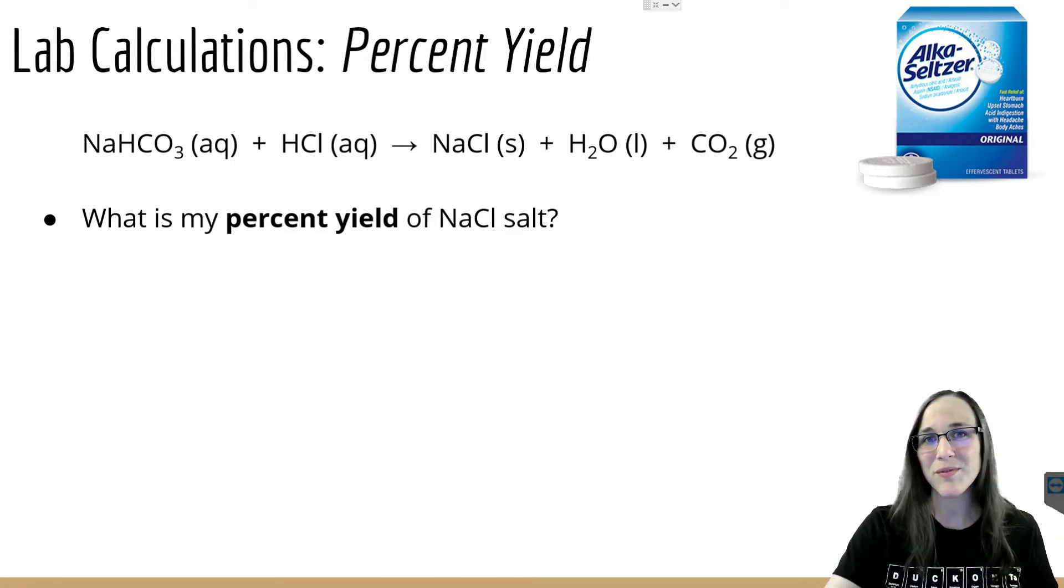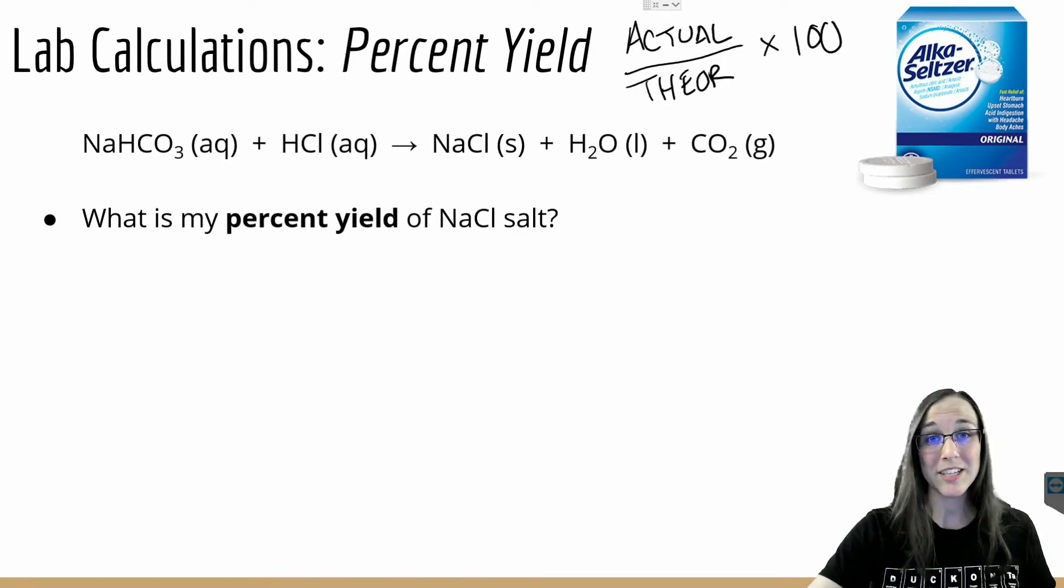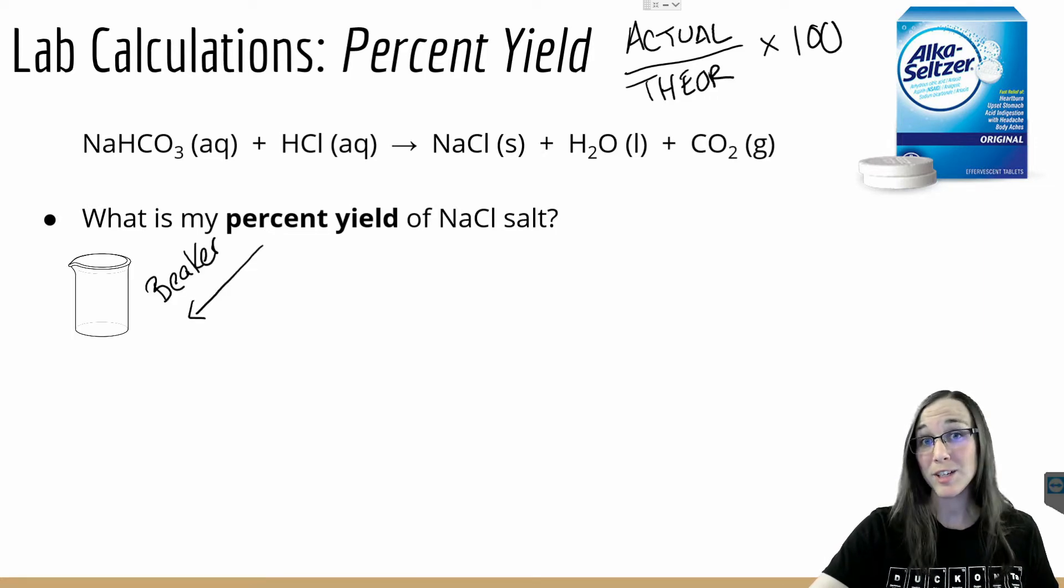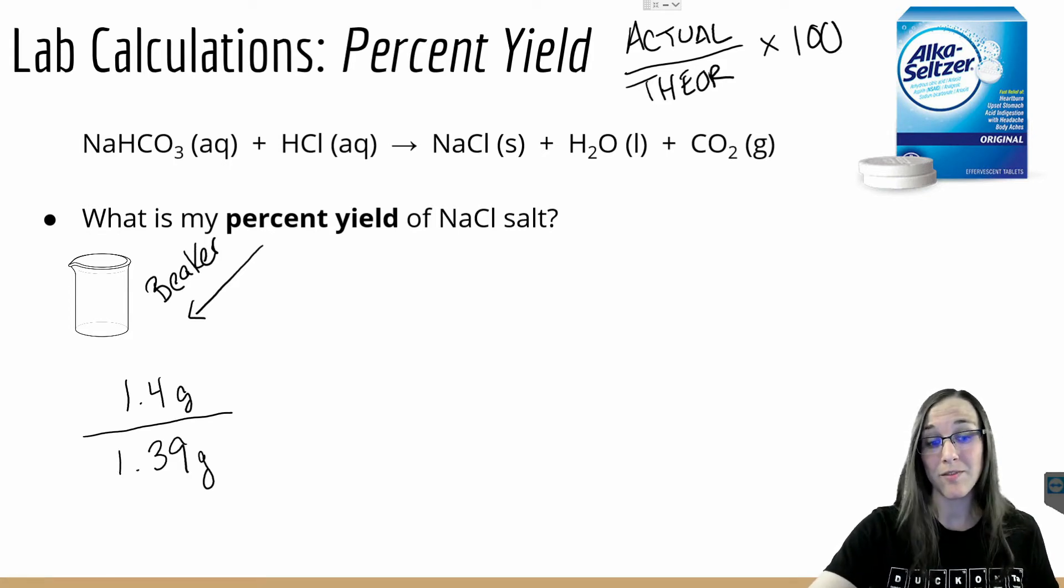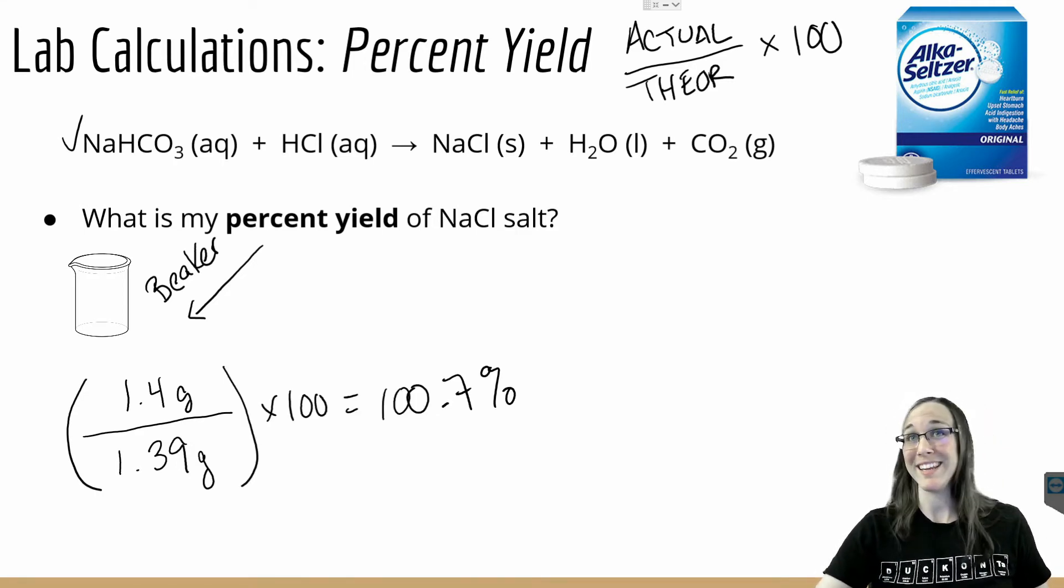Recall that the equation for percent yield is actual over theoretical times 100. So if we were basing our calculations off of the beaker weight, we had an actual amount of 1.4 and we had a theoretical amount of 1.39. That's what we had calculated with the limiting reactant of baking soda. All of that times 100 would give me 100.7 percent yield.